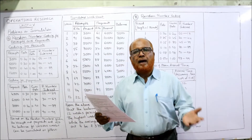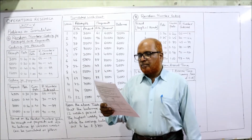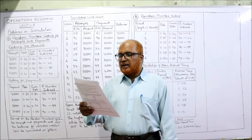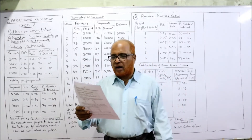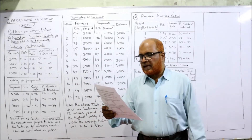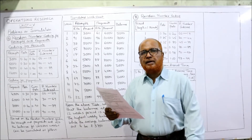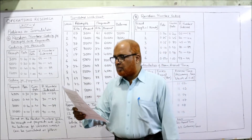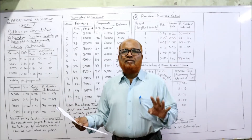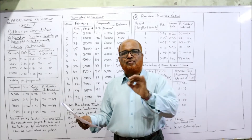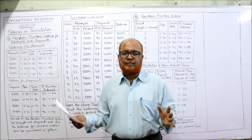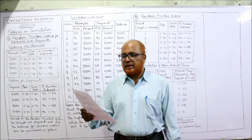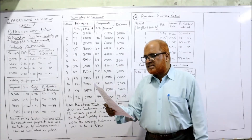The probability of receipts are 0.20, 0.30, 0.40, and 0.10. Similarly, the weekly payments are 4,000, 6,000, 8,000, and 10,000, and their respective probabilities are 0.30, 0.40, 0.20, and 0.10. So we are given four average receipts and four average payments weekly, and for each receipt and payment we are given the probability.